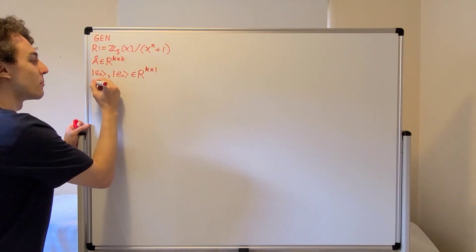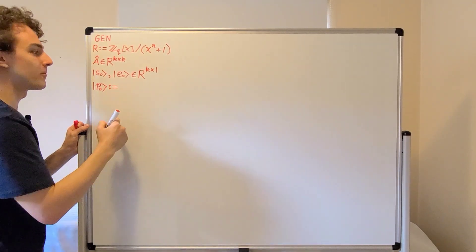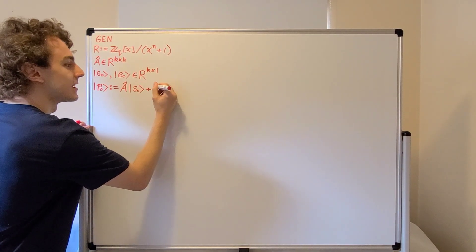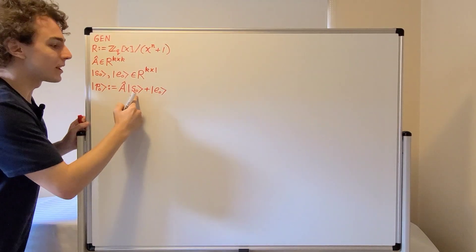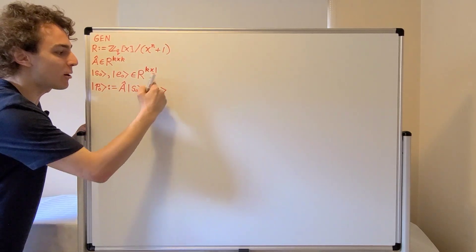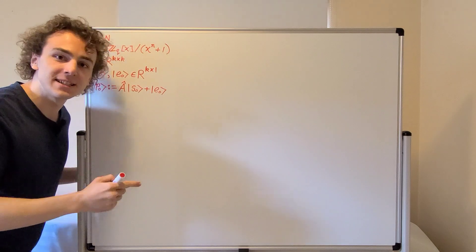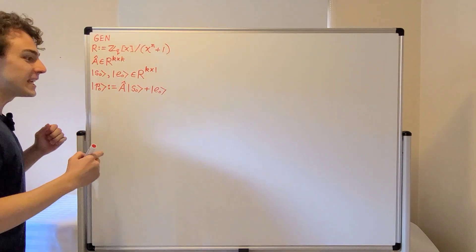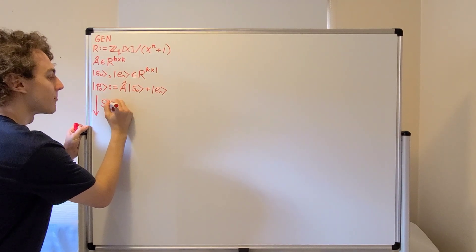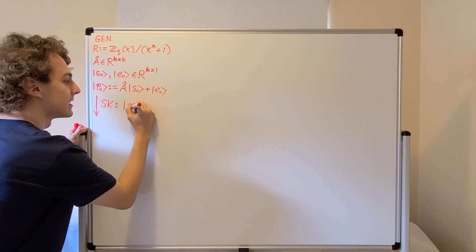Now let's define the public column vector P0. We can define this public column vector as A times S0 plus E0. So we multiply the secret column vector by the matrix A, and then we add the result to this error column vector, giving us the public column vector P0. Now we have all the information necessary to construct a pair of keys. The secret key SK will include the secret column vector S0.